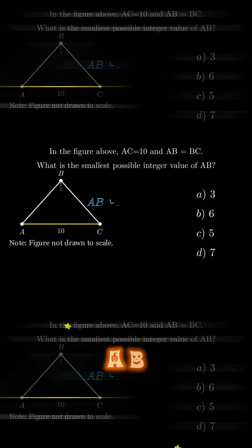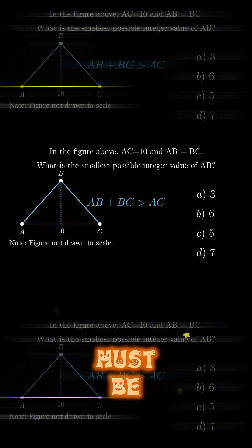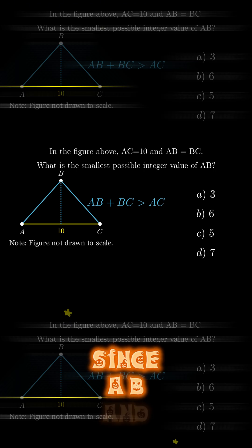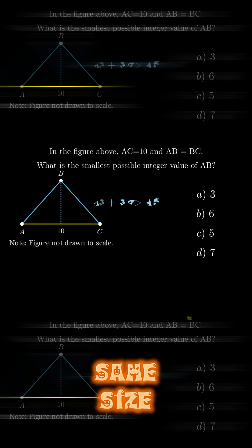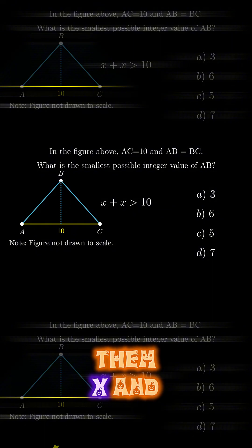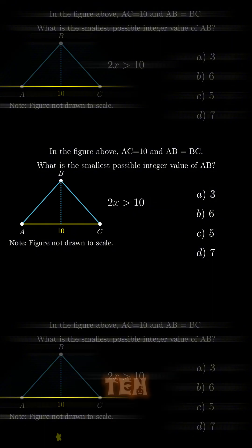So here, AB plus BC must be greater than AC. Since AB and BC are the same sides, we can call them x, and this should be equal to 2x is greater than 10.